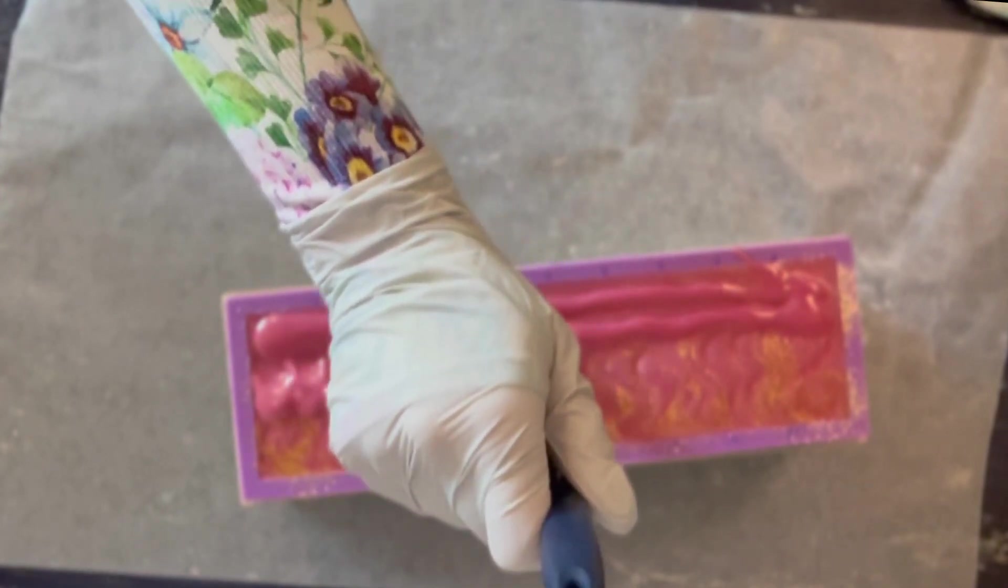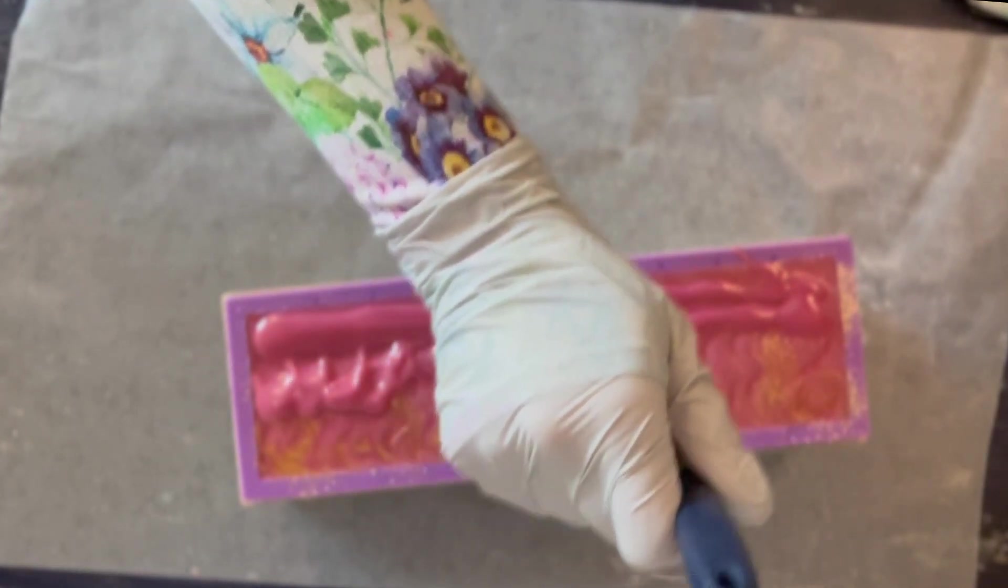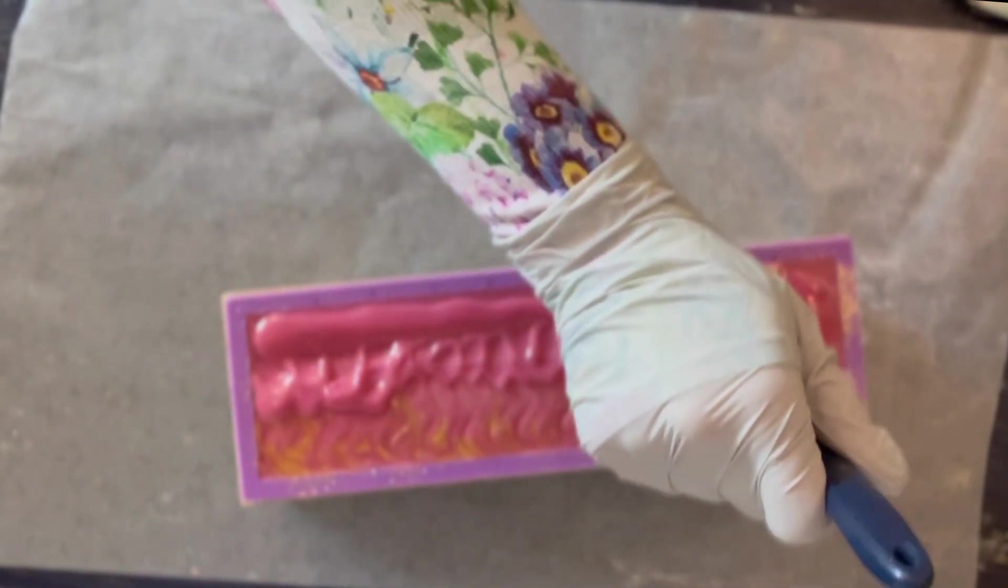So all the stuff underneath where I'm pulling from is solid. And so I'm trying, you can't see it on camera but I'm trying like I'm pushing this to try to get the design that I want.